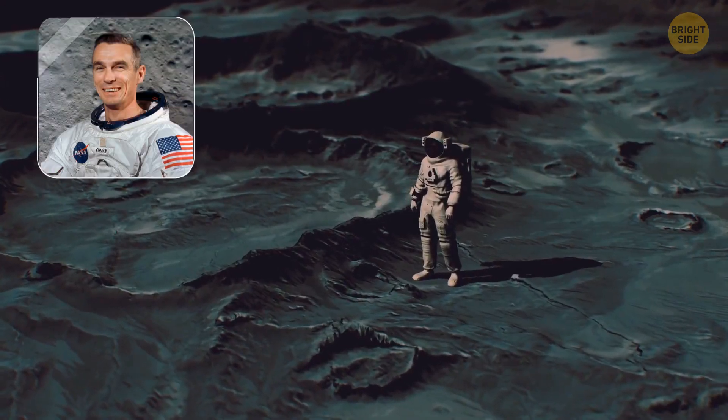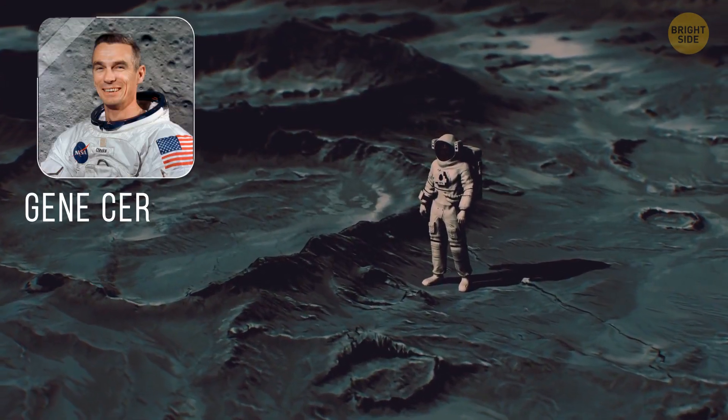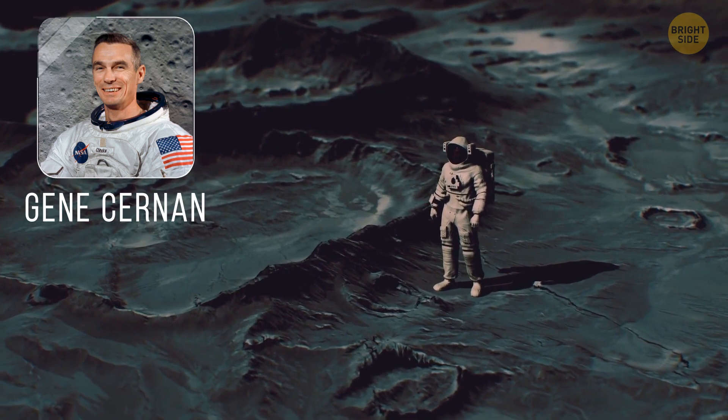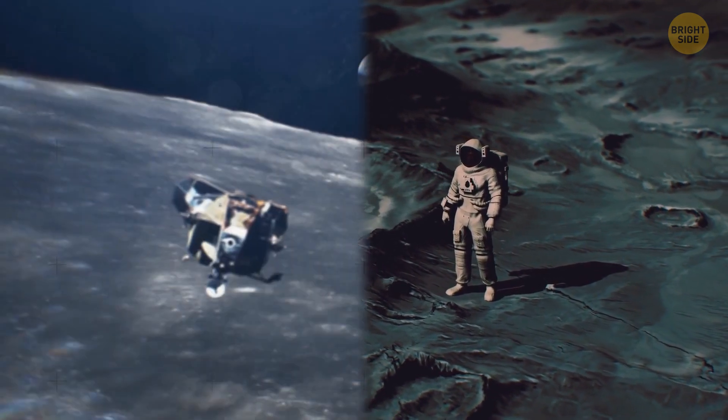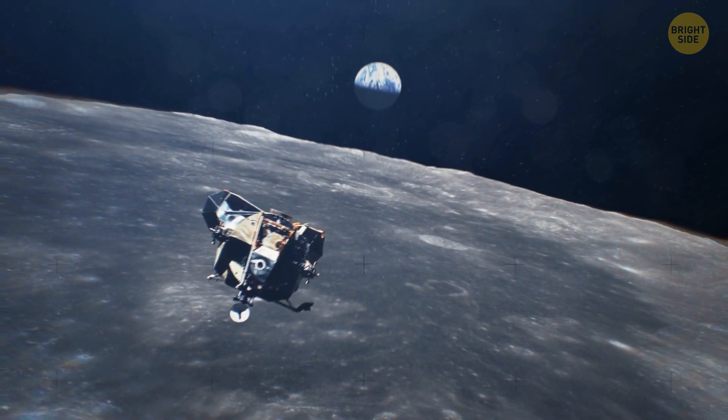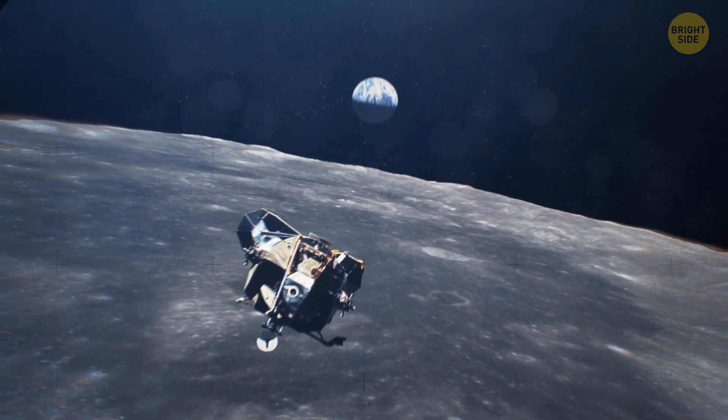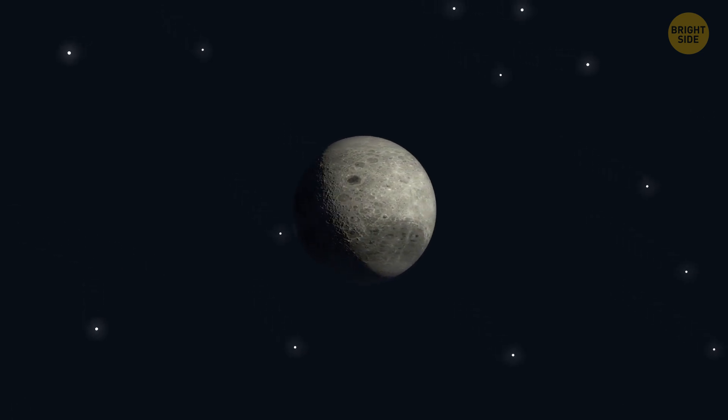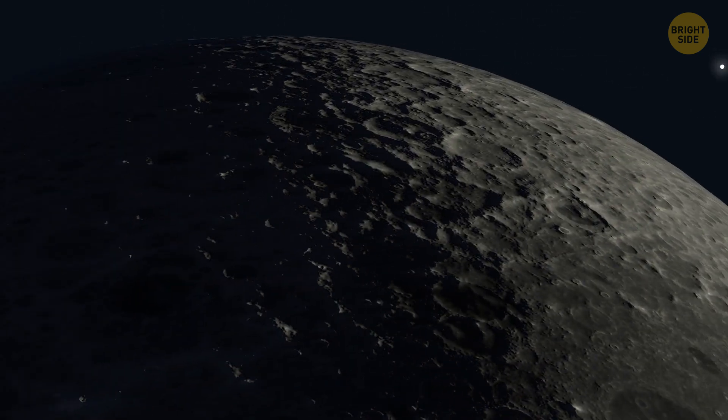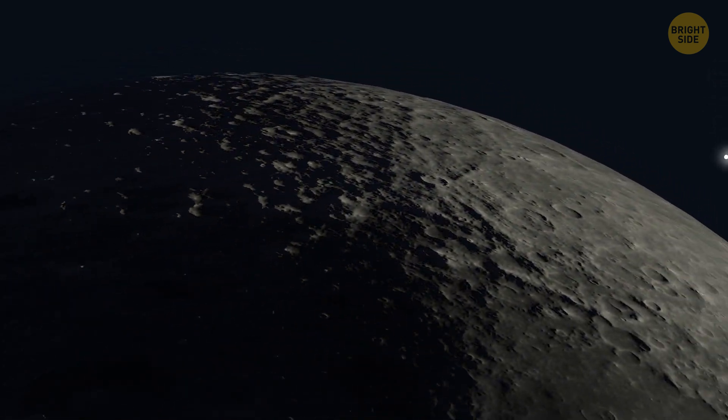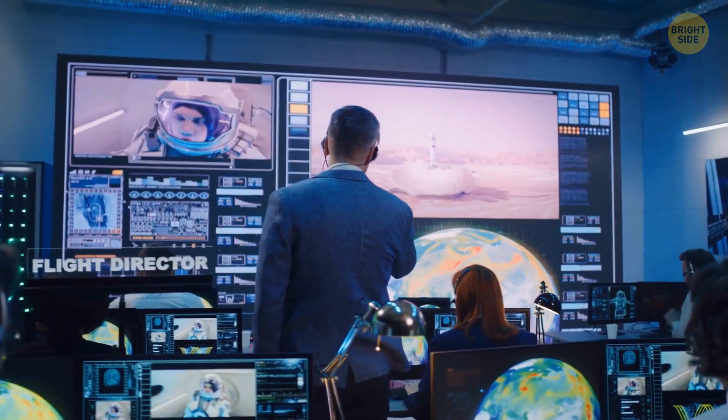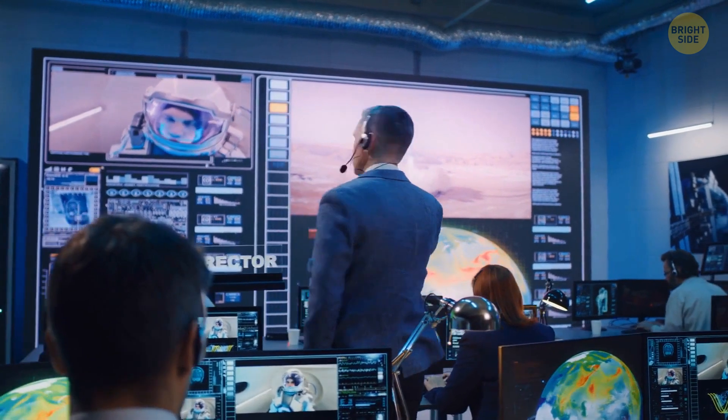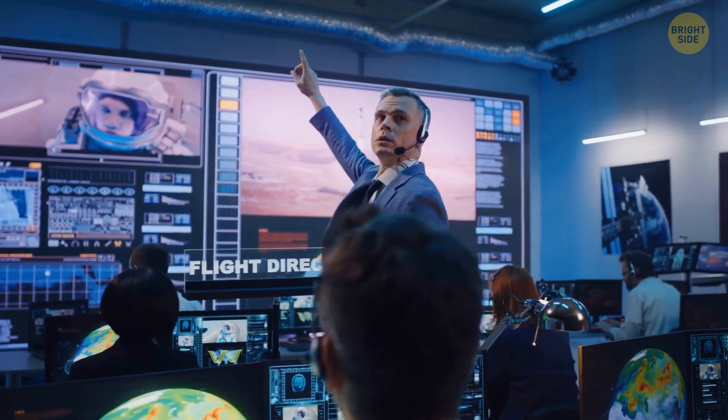The last person to have stepped on the surface of the moon was Gene Cernan. It happened in December 1972. This was part of a mission called Apollo 17. You probably can't help but wonder how come no one has reached the surface of the moon in the next 50 years. Turns out, it's because sending people to the moon is very expensive. Regardless, we've made a lot of progress on Earth and are ready to send astronauts to our satellite pretty soon.